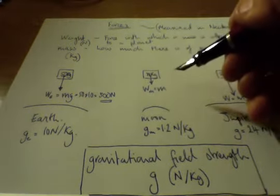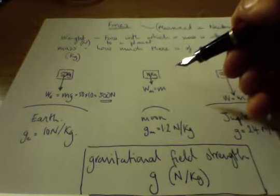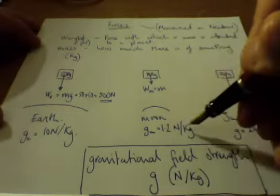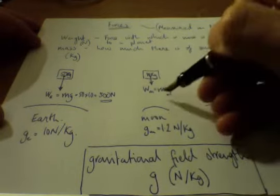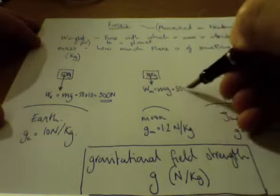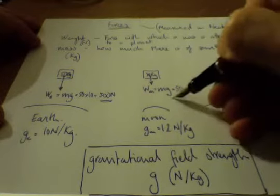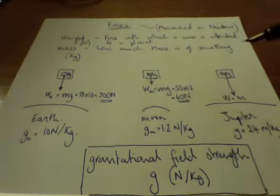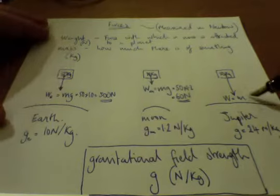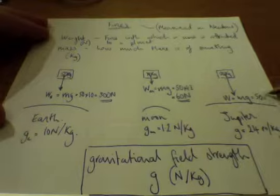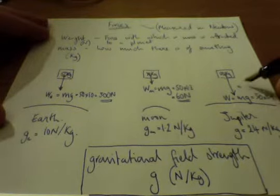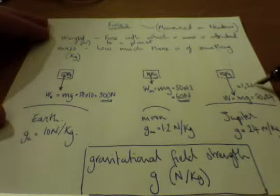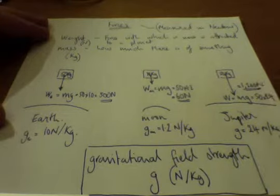Now, on the Moon, we only have 1.2 newtons per kilogram. However, we still have the 50 kilograms, and that gives us a force of 60 newtons. Whereas on Jupiter, of course, we have a force of 24 newtons per kilogram, and that gives us a force, or a weight, of 1,200 newtons.